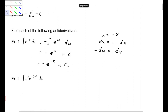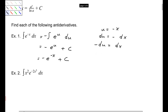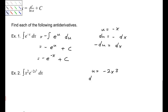Number two: the easy choice for u here is negative 2x cubed. So the derivative, du, is negative 6x squared dx. Don't forget that. Now, we're actually trying to replace an x squared, so we will rearrange this by dividing by negative 6 to get negative 1/6 du equals x squared dx.